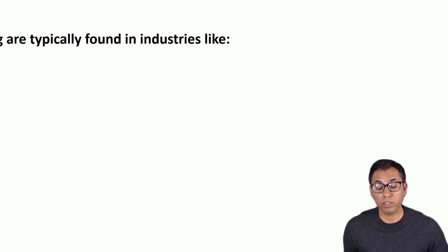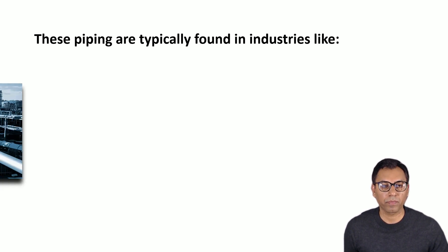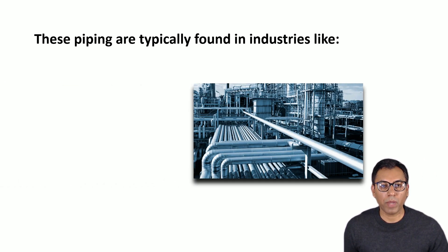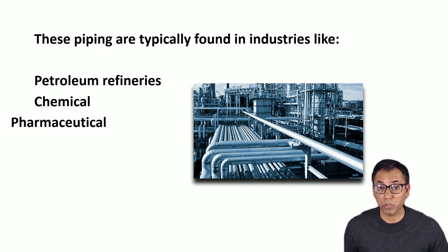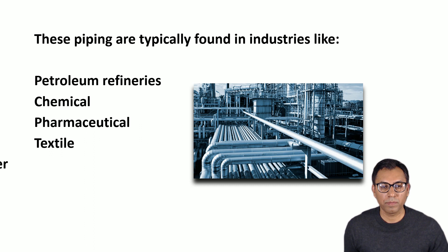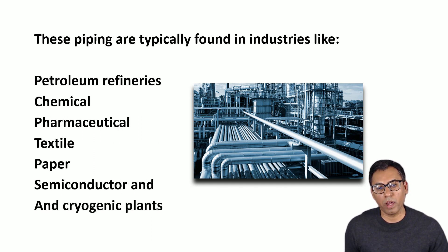Now let's talk about what are the typical industries where the process piping code is used. The piping used in industries like petroleum refineries, chemical, pharmaceutical, textile, paper, semiconductor, and cryogenic plants falls under this code.